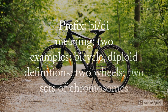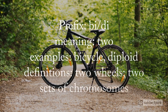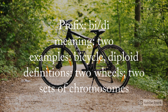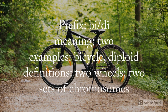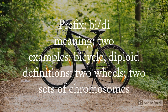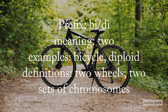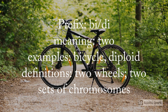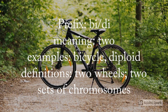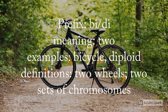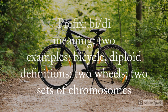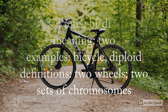The prefixes bi- and di- both mean two. For example, the words bicycle and diploid. Bicycle means two wheels and diploid means two sets of chromosomes.